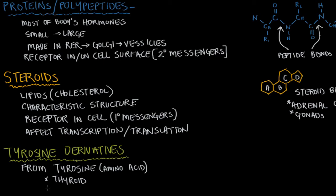Another example of tyrosine derivatives are catecholamines — those hormones produced in the adrenal medulla that are involved in the fight-or-flight response, like epinephrine and norepinephrine. These tyrosine derivatives act similarly to peptides, binding on the outside of the cell and releasing secondary messengers inside the cell.